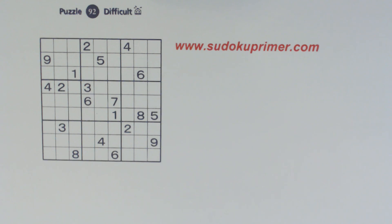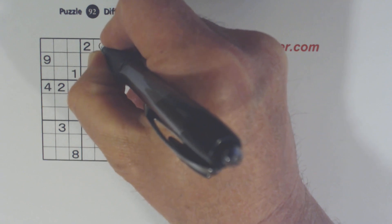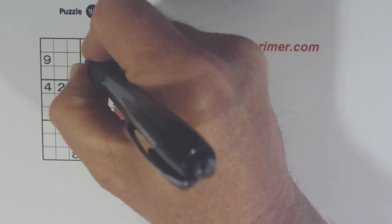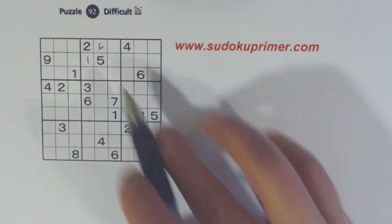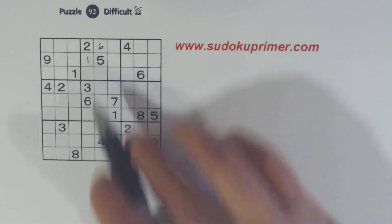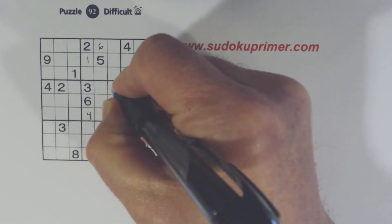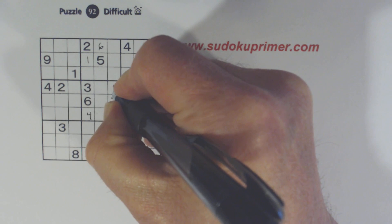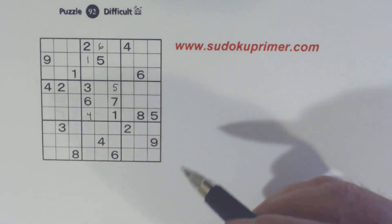There are only two sets of those twins that we can solve right away: the 1-6 twins and the 4-5 twins. The rest of them we can't solve yet.